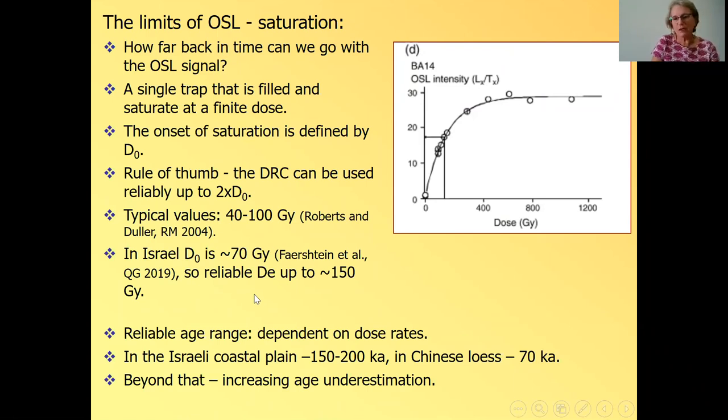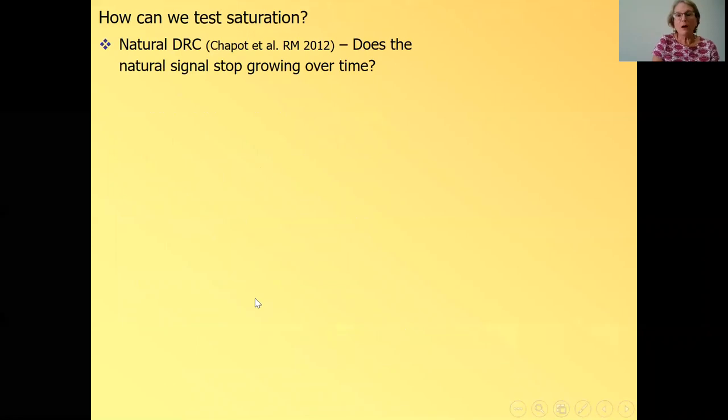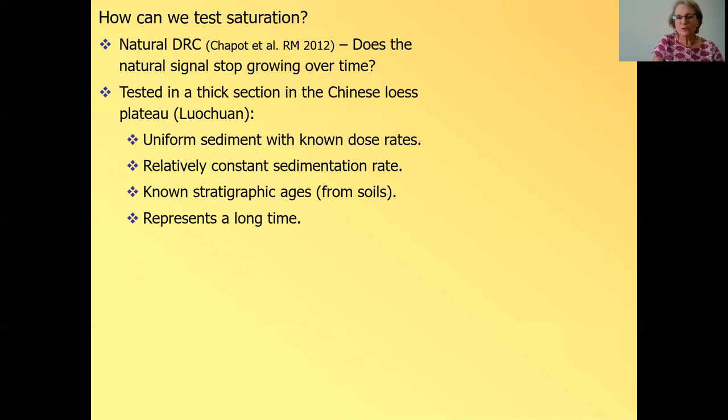So in the coastal plane where the dose rate is low, like maybe one gray or even less than one gray per thousand years, we can date 150 to 200,000 years with a reasonably good reliability. But for example, in Chinese loess, which has higher dose rate, it's up to 70,000 years. So that's the limit of OSL. And beyond that, we get increasing age underestimation. How can we test if a sample is saturated? Or how can we understand the saturation at all?